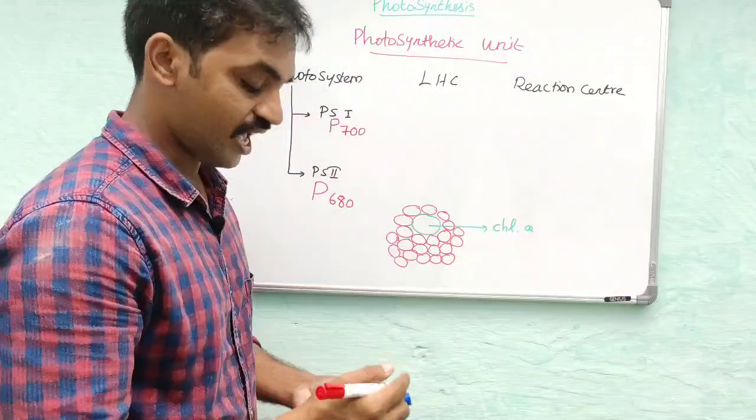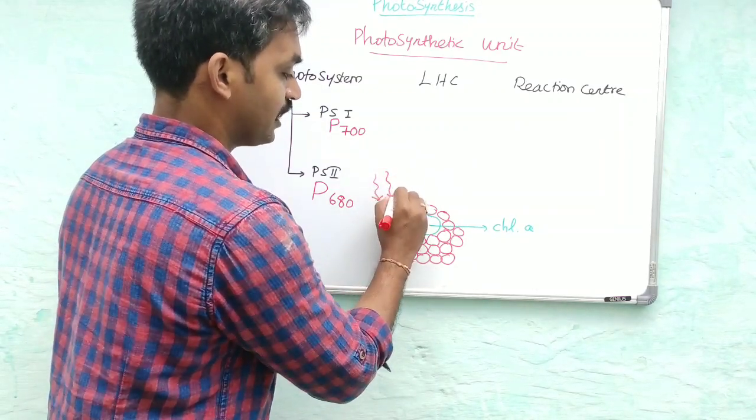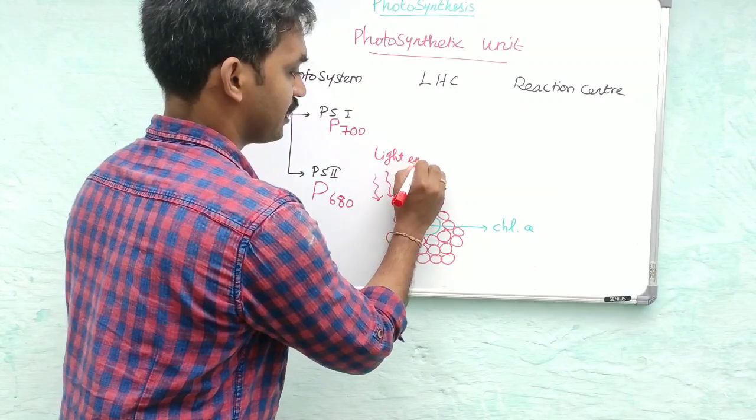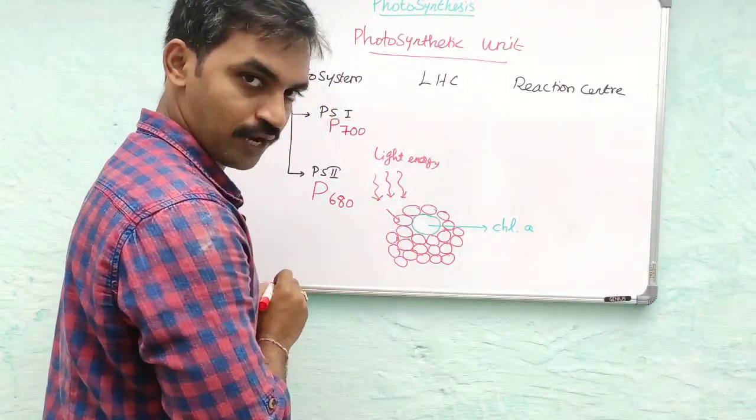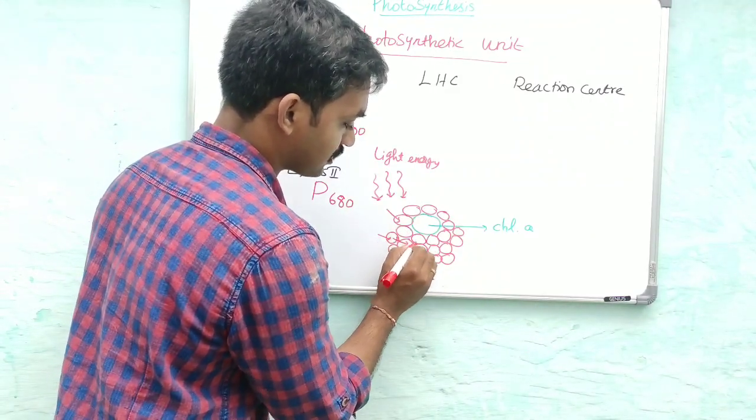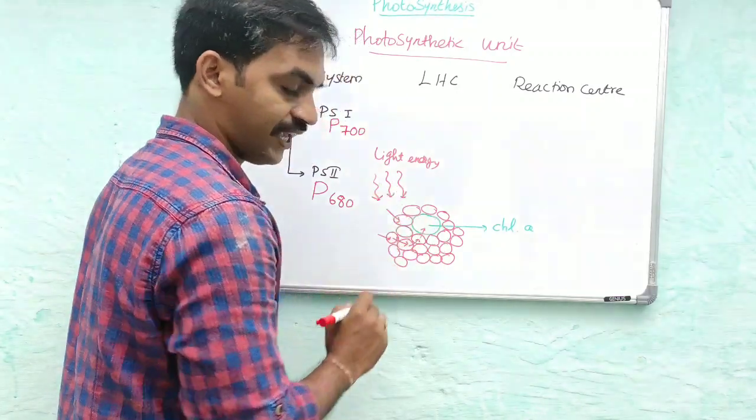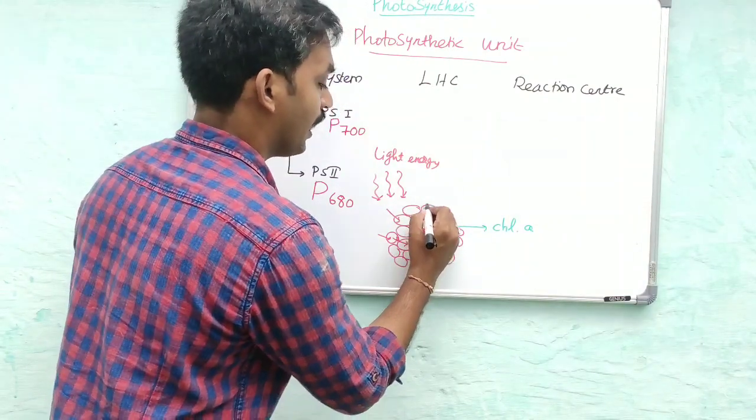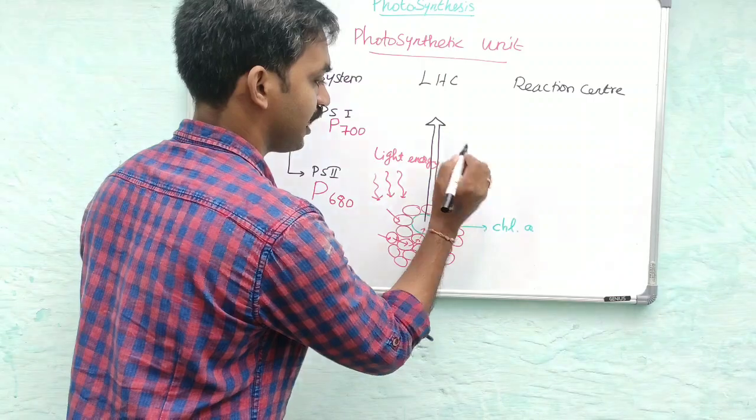Light energy first reaches the accessory pigments, and then the accessory pigments transfer the light energy to chlorophyll a at the center. Chlorophyll a then goes to an excited state and electrons are expelled.